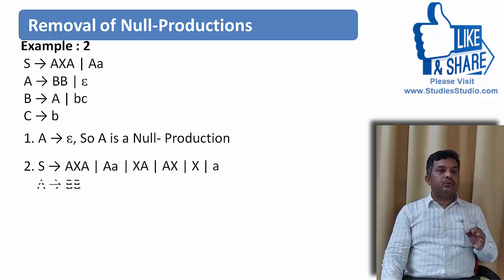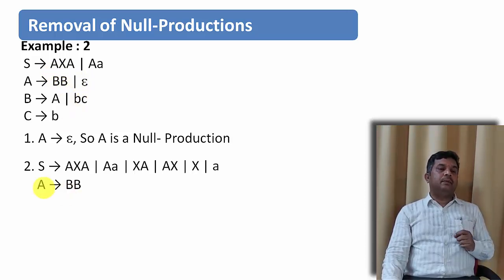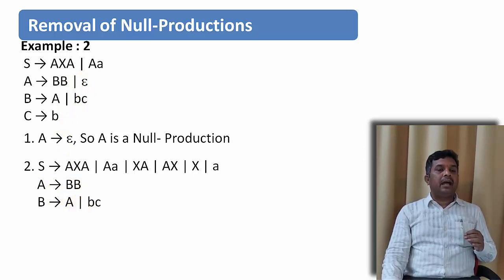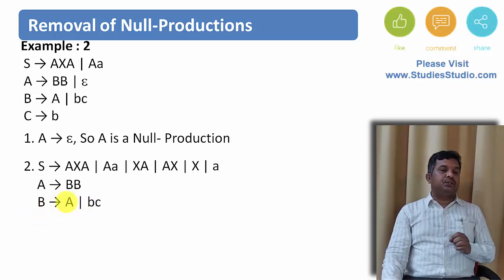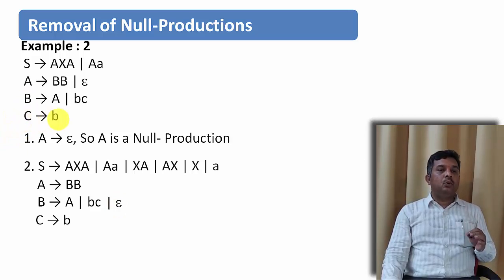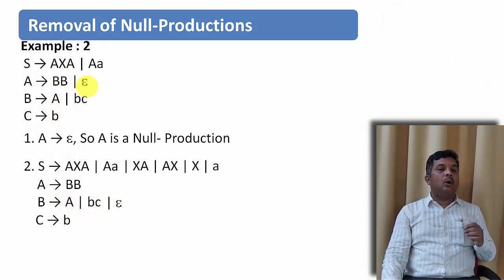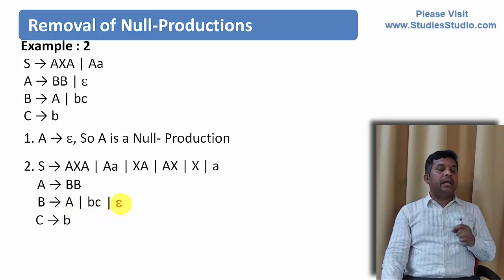For the second production A derives BB or epsilon: there is no A on the right-hand side, so we just remove epsilon and write A derives BB. For the third production B derives A or BC: since A is nullable, substituting epsilon for A could produce epsilon. For the fourth production C derives B: there is no A on the right-hand side, so it is written as is. After this step we find that we have introduced B derives epsilon, which is a new null production.